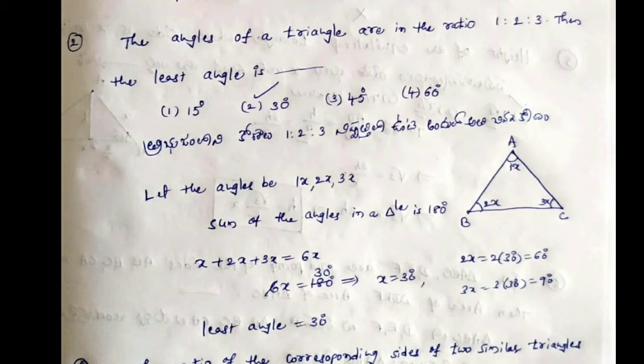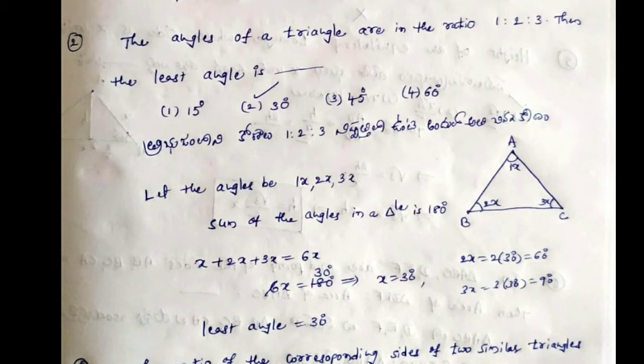Then, the least angle is dash. The number of angles in this triangle includes the least angle and the largest angle. This is the compulsory question. If the ratio is 1 to 2 to 3, the angles are 1x, 2x, and 3x respectively.